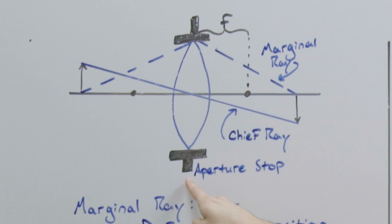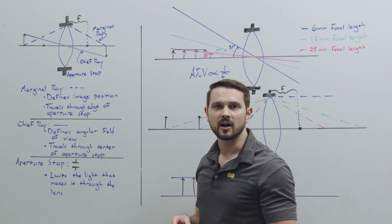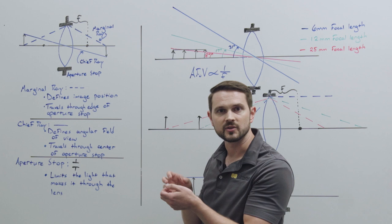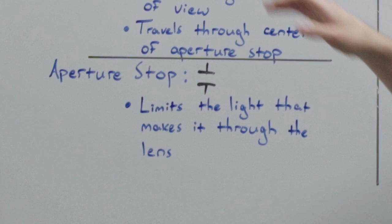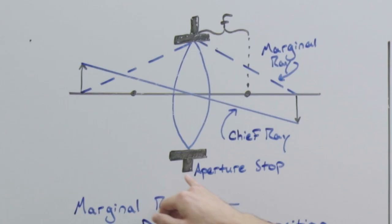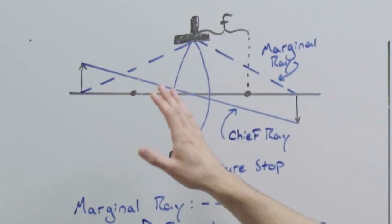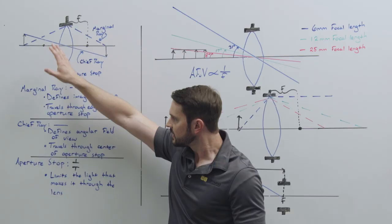The aperture stop is the last thing to talk about here. You may have seen it before on a fixed focal length or photography lens where you can increase those f-numbers. What an aperture stop does is limit the light throughput through a lens — it defines how much light can make it through the system, indicated here with these T-shaped icons. So let's dig into how we can manipulate these three different things to create a lens that's telecentric and better for measurement.